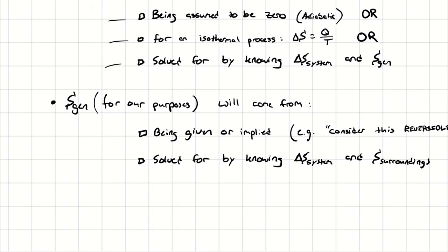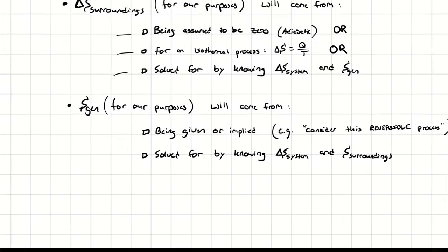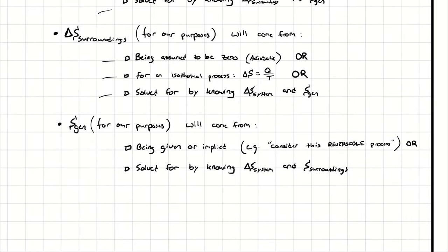Lastly, S_gen will either be given or implied. For example, consider a reversible process — if it's reversible, that means the entropy generated must be zero. Or it will be solved for by determining delta S of the system and delta S of the surroundings.